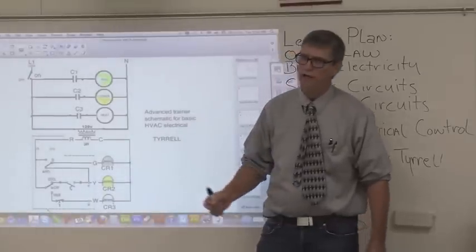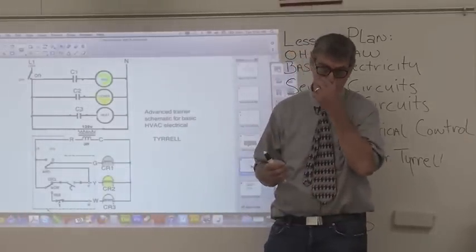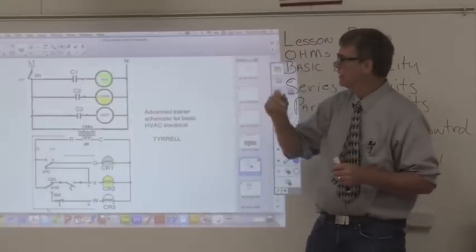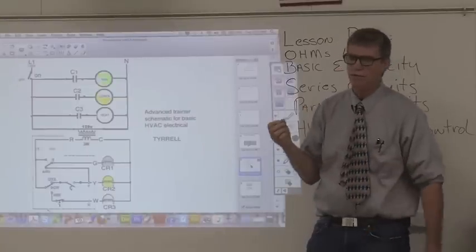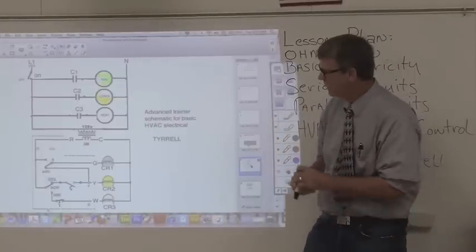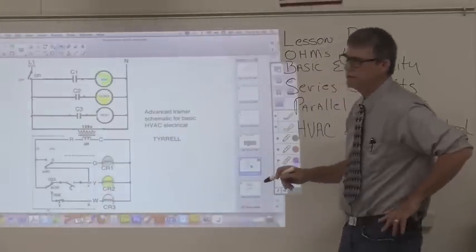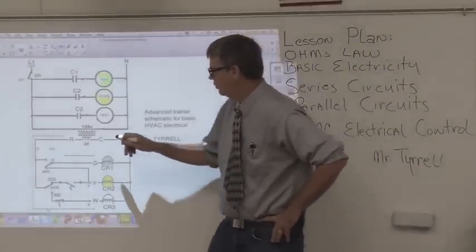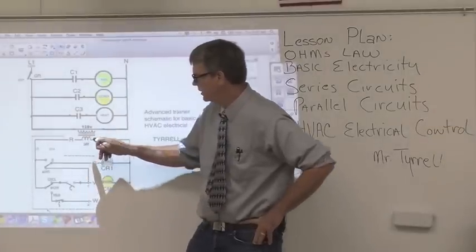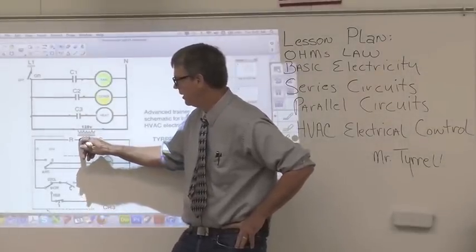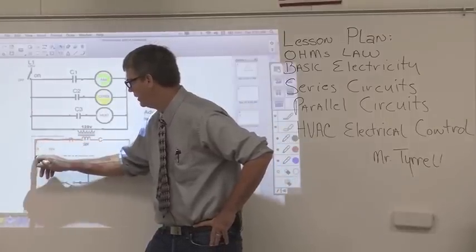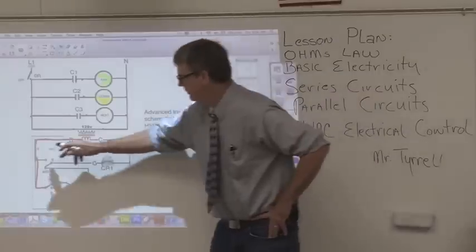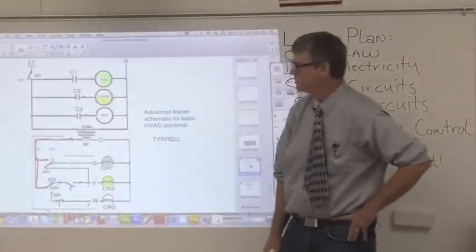The reason we do that mainly is for safety, but it's also a cheap way to run your wires to all the different components. You can run that wire inside the walls and not worry about putting it in conduit because 24 volts is a safe voltage. When we step that down to 24 volts, if this is the secondary side of the transformer and this is our hot side, we call that R.